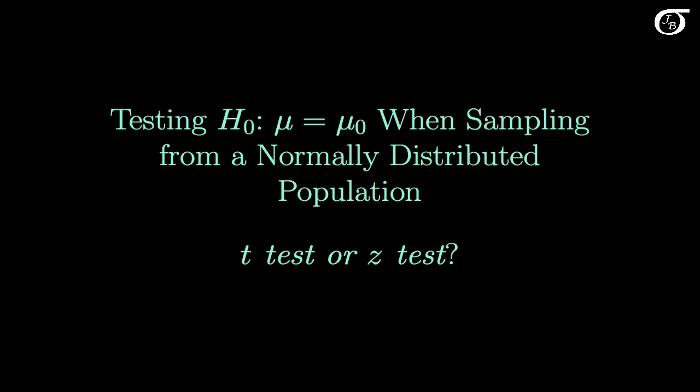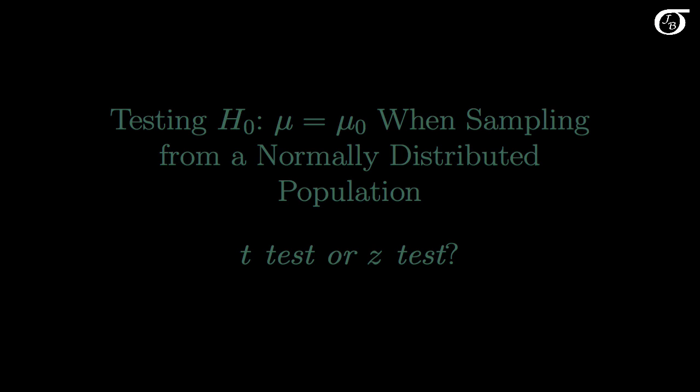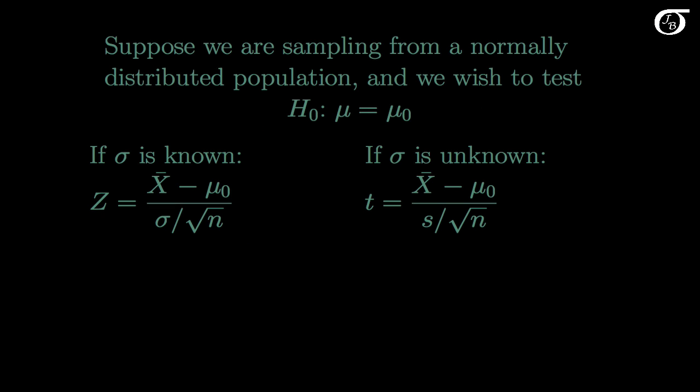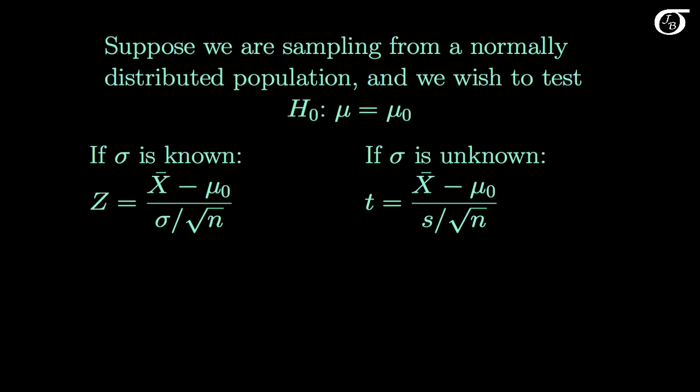Let's look into testing a hypothesis about the population mean when sampling from a normally distributed population. The question I'm going to look at here is: should we use a t-test or a z-test? Suppose we are sampling from a normally distributed population and we wish to test the null hypothesis that the population mean is equal to some hypothesized value mu-naught.